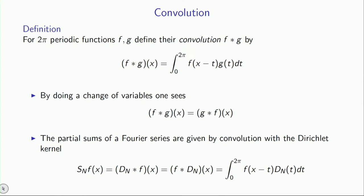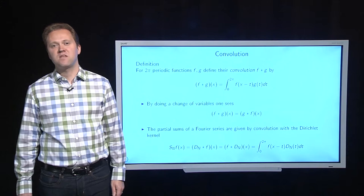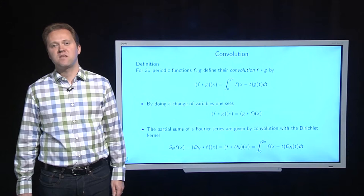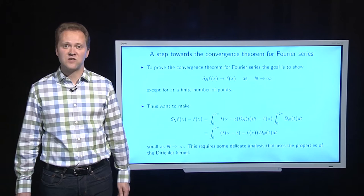Now, because it doesn't matter which order you convolve things in, you can switch the order of f convolved with the Dirichlet kernel, and you get this following expression for the partial sums. Now, why is all of this useful for the convergence theorem for Fourier series? Let's take a little step towards that.